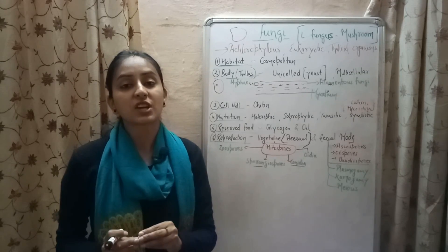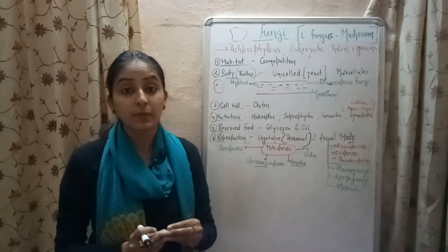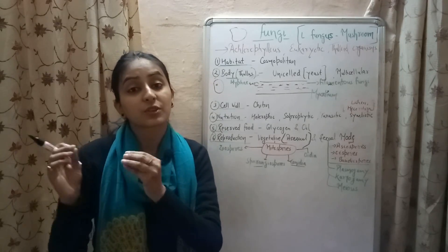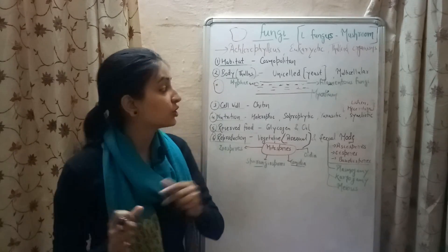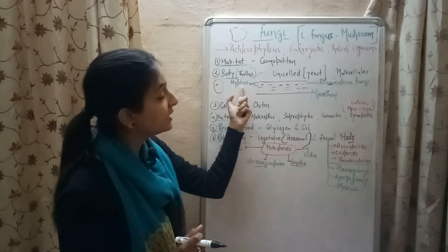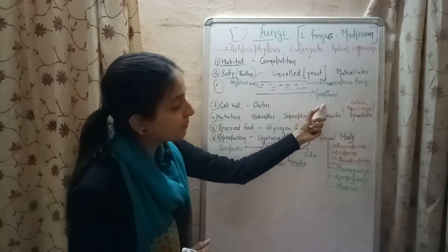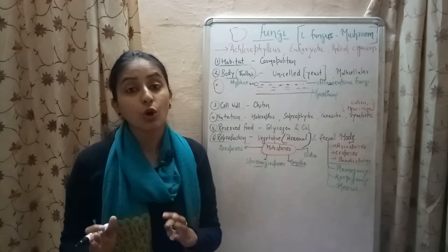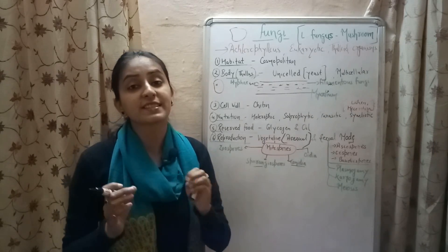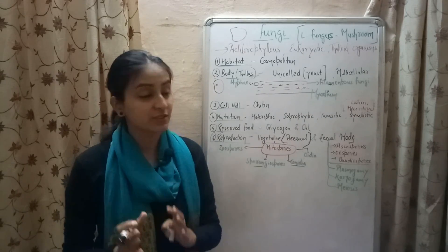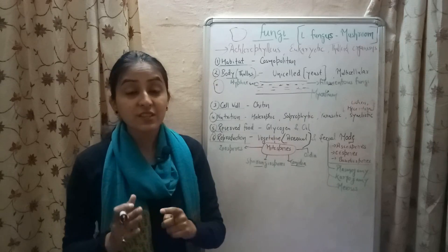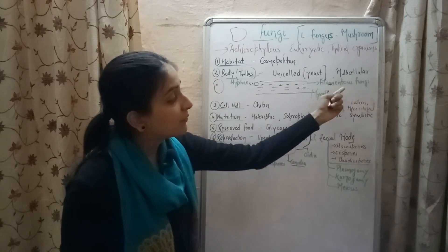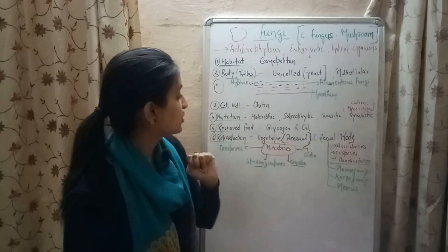Multicellular fungi include those arranged in a thread-like structure known as hyphae. The mass of hyphae is called mycelium. Thus, the body of some multicellular fungi is known as mycelium, and such multicellular fungi are known as filamentous fungi.